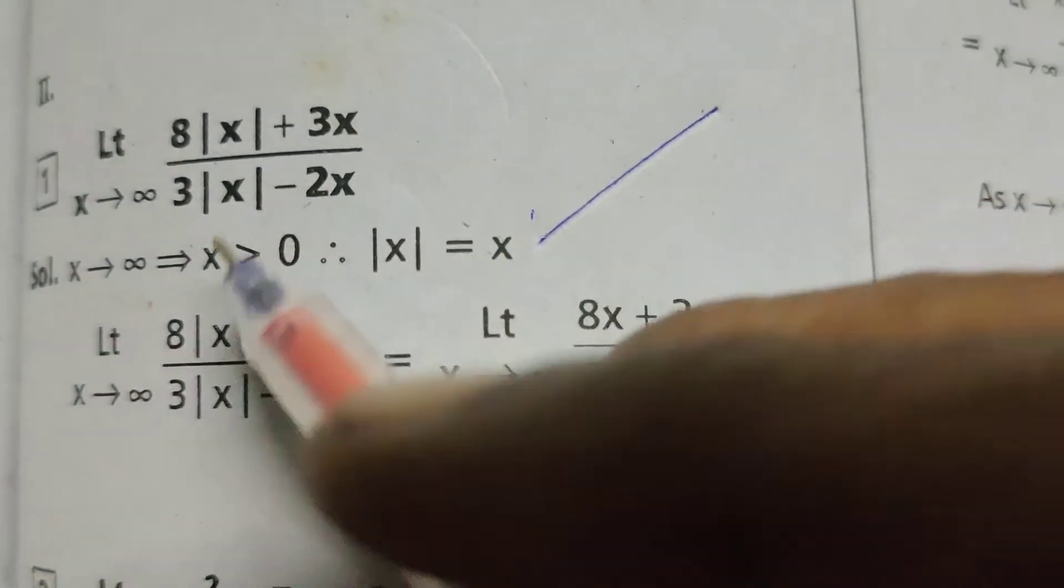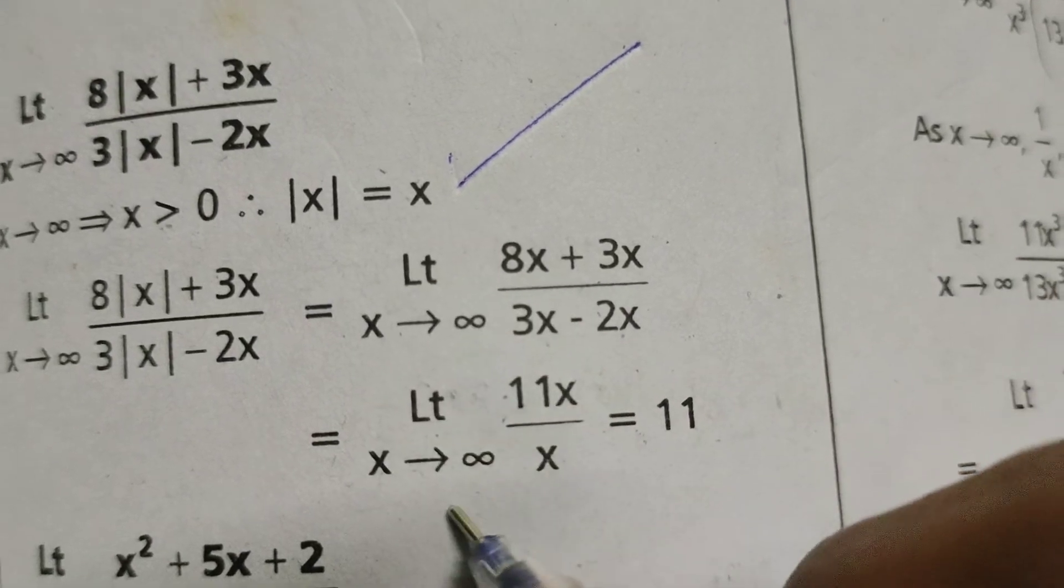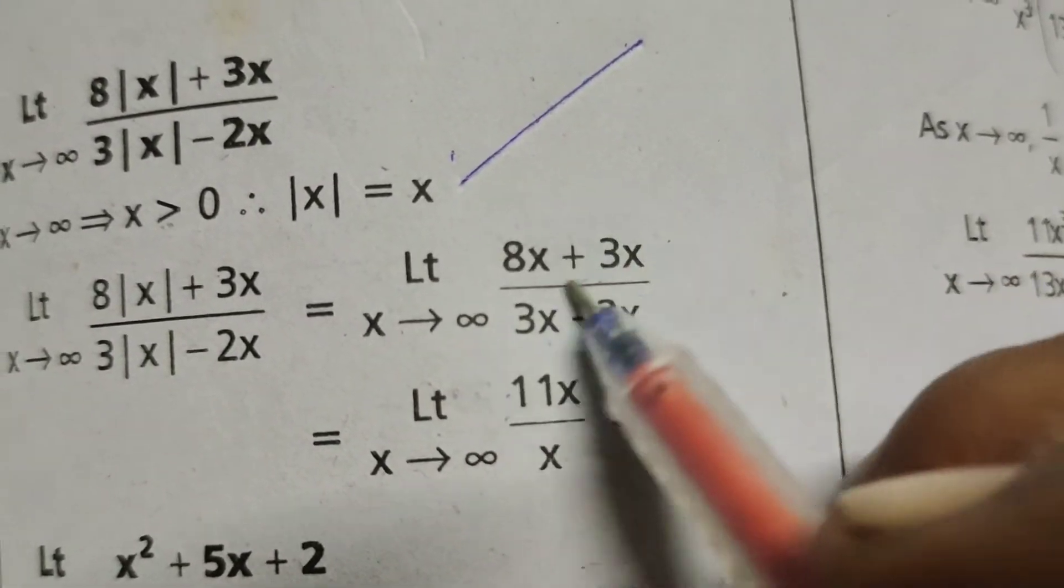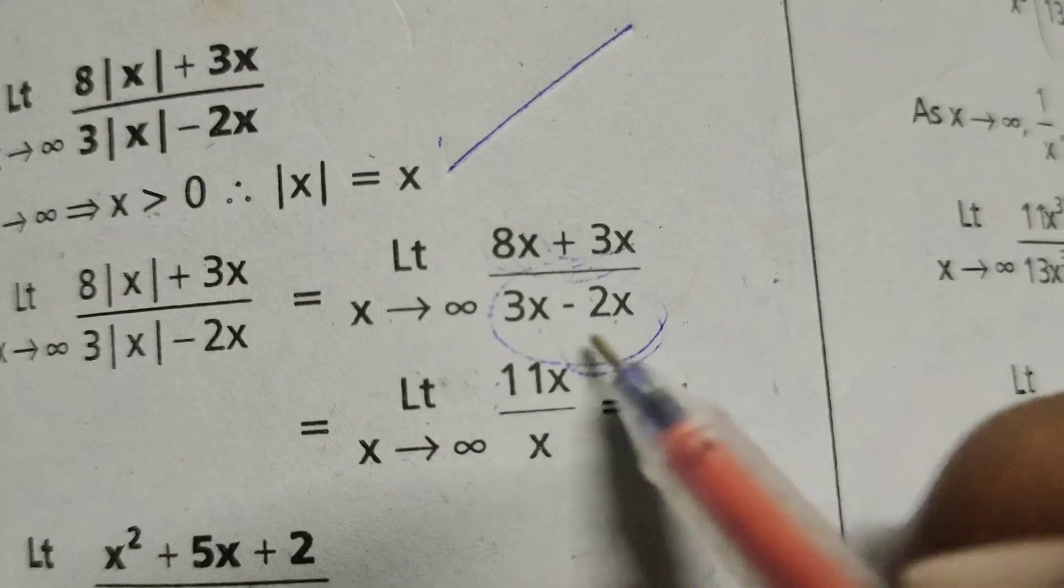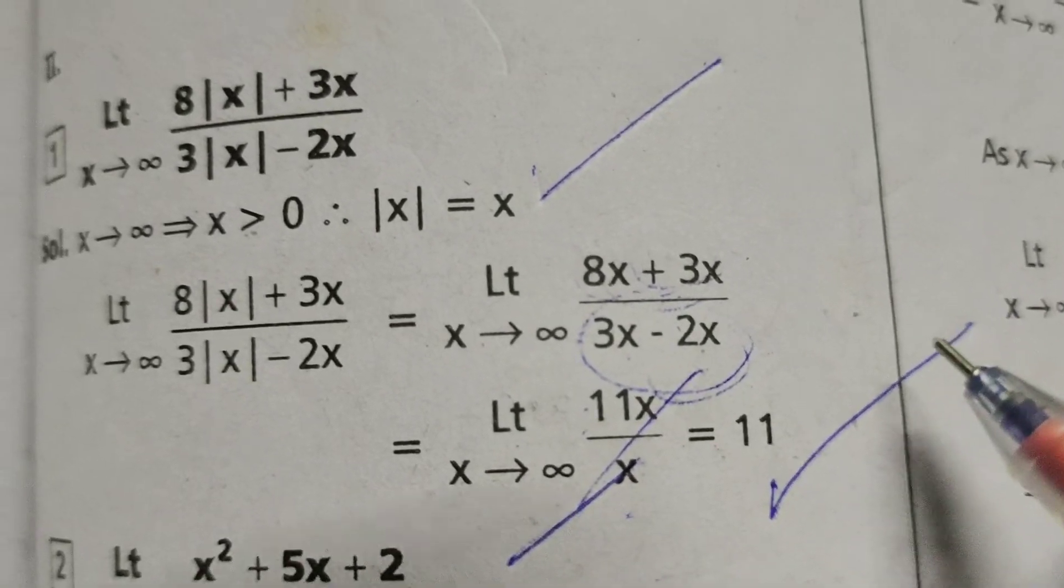In this modulus of x write x minus 2x. Limit x tends to infinity, 8 plus 3x means 11x, 3x minus 2x means x. X gets cancelled, therefore 11.